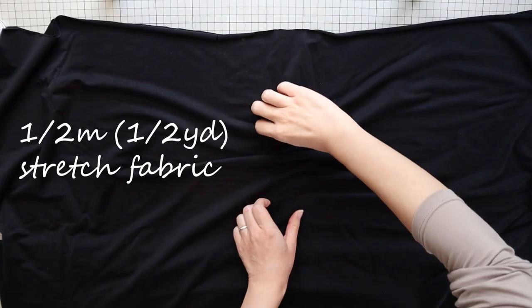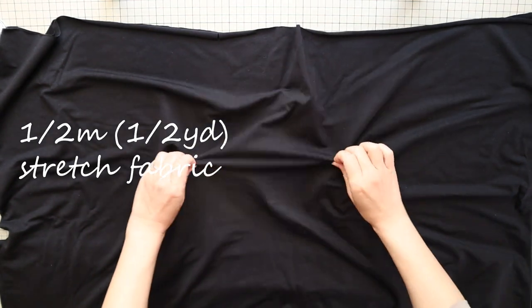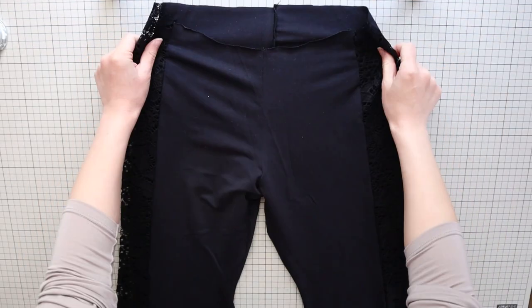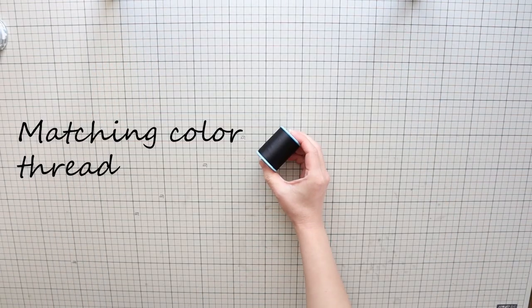To make this DIY built-in ruched skirt, you need about half a meter or half a yard of stretch fabric. Make sure it's nice and stretchy. The pants you want to attach your skirt to, and matching color thread.